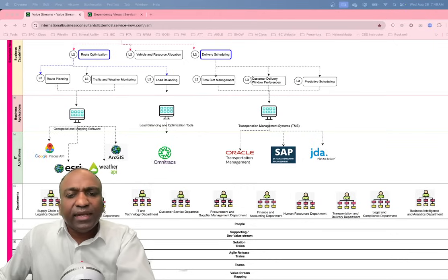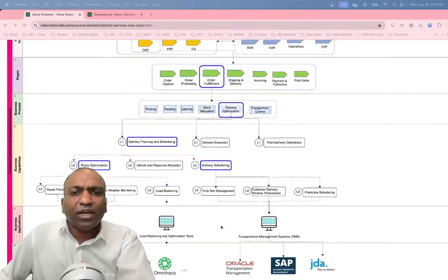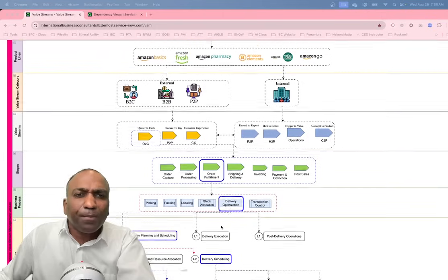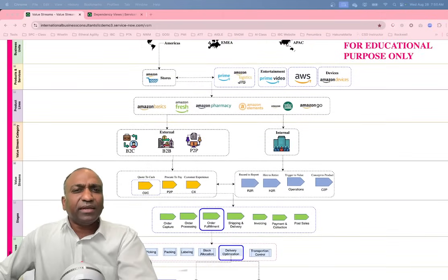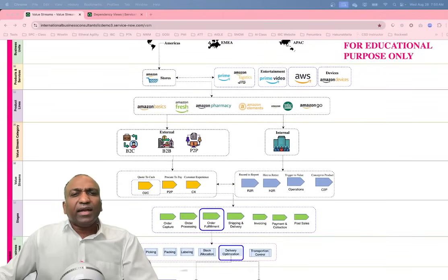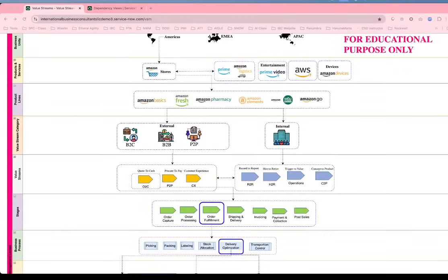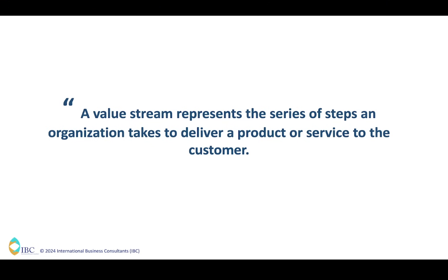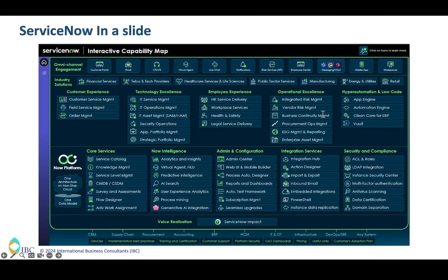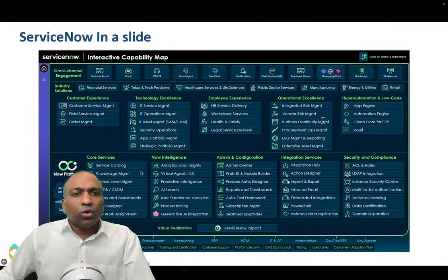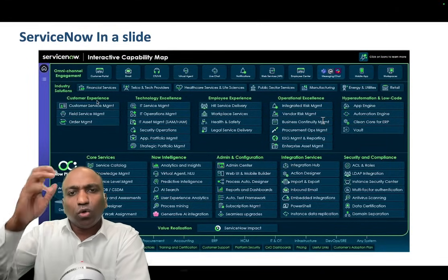Today I'll stop there and another day I'll expand on value stream identification and mapping. For now, I just want to introduce value streams and the complexities behind them. Let me go a little deeper and show some hands-on material. I'm going to use ServiceNow as a tool — a low-code platform — to demonstrate a hands-on experience of managing these value streams in an organization.